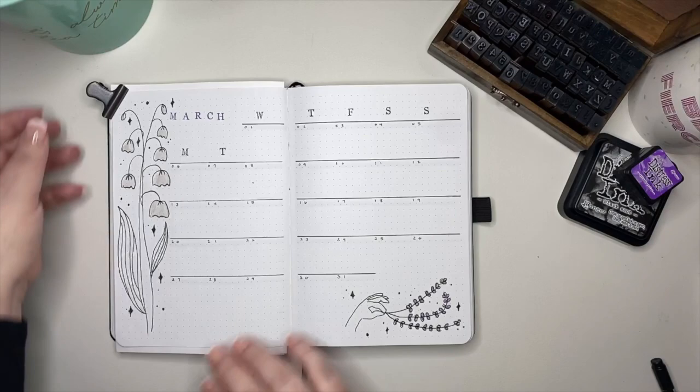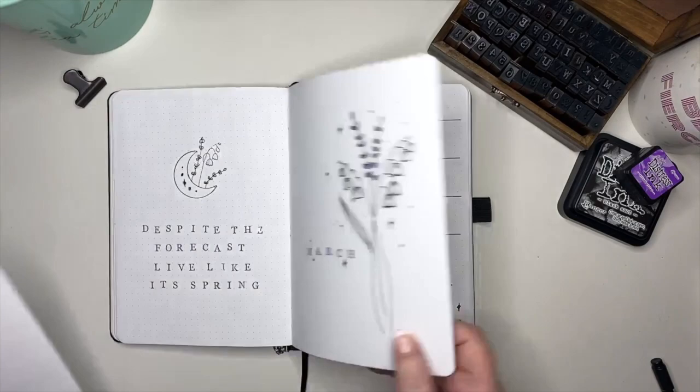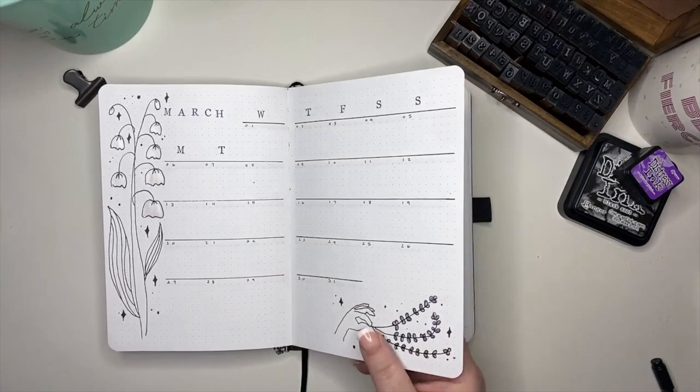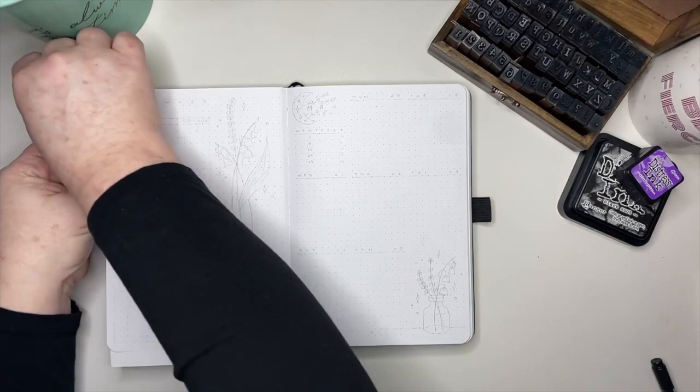And with that tidbit of floral trivia, this calendar page is done. I am removing that piece of paper so I can move it from one page to the next, again just to make sure that that paint is fully dry before we set up what is going to be Kenny's finances page as well as his first week of March.